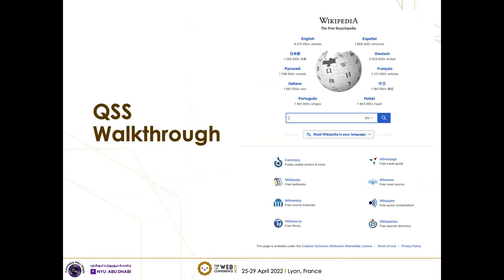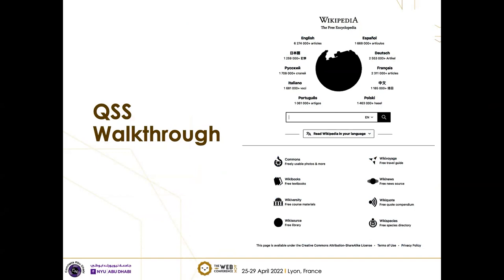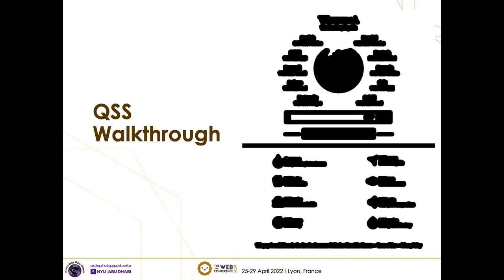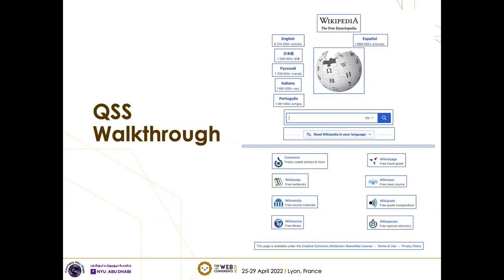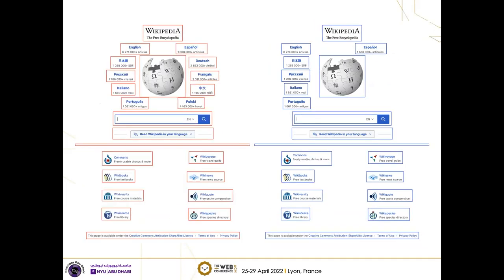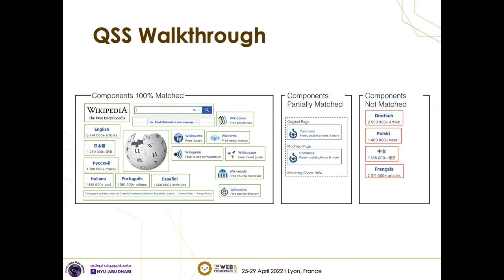Let's do a quick walkthrough. We have a Wikipedia webpage as the original. We remove the background, make all foreground pixels black, dilate to identify all components, then crop these components from the original three-dimensional image. This is the simplified page — side by side you can see they're mostly similar but not entirely. Components found 100% are given a score of one; partially matched components score between zero and one; components not found score zero. The area-weighted average gives the QSS score.